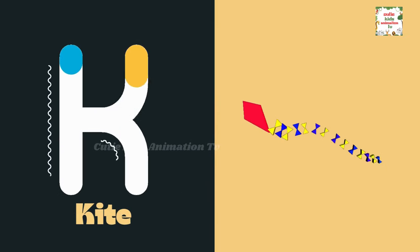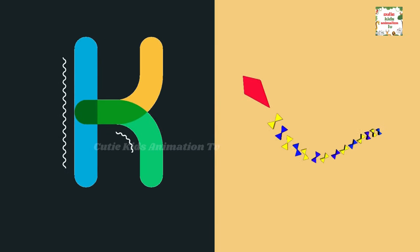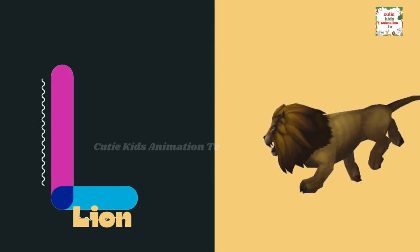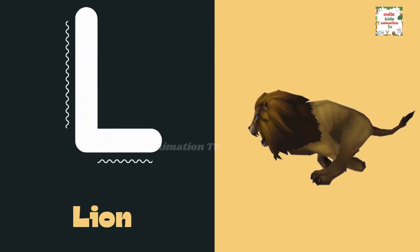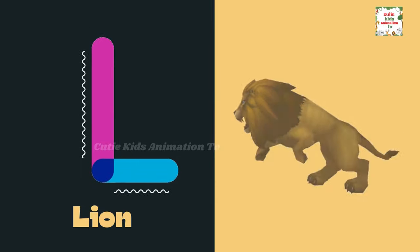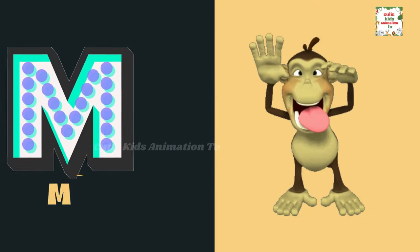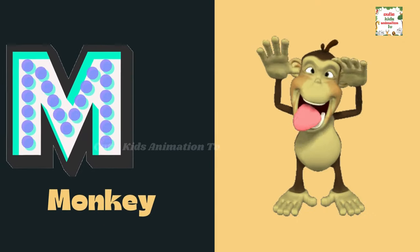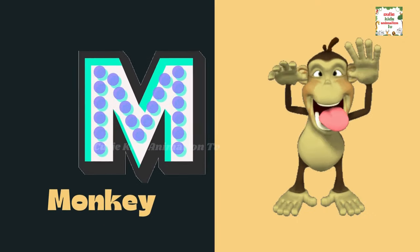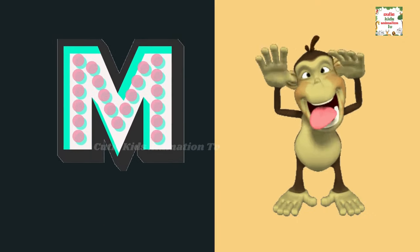K is for kite. K, K, kite. L is for lion. L, L, lion. M is for monkey. M, M, monkey.